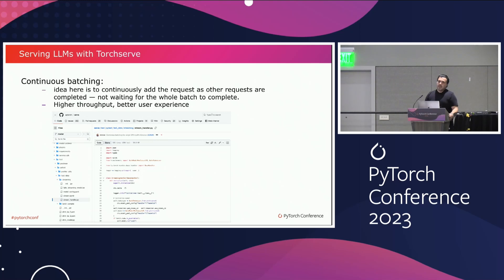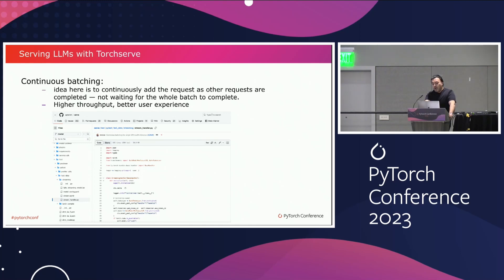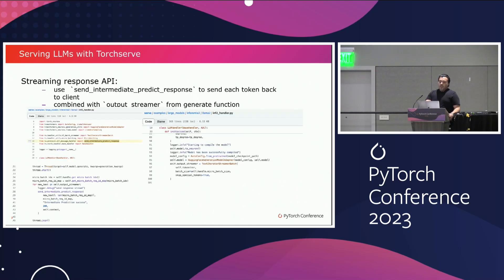We also have continuous batching and other ingredients for the LLM serving recipe. The idea is to continuously add requests from the queue to the current batch as one request gets completed, so you don't have to wait for the whole batch to complete before sending the next request. This helps with higher throughput and better user experience. This leads to the streaming response API — when sending a request to these LLMs, they can take a long time for token generation, and streaming helps you get each token as it's generated rather than waiting for the whole sequence.